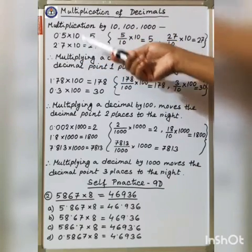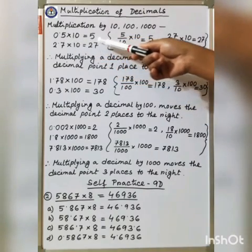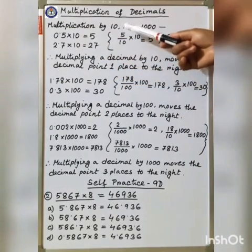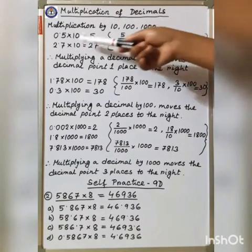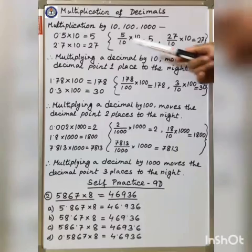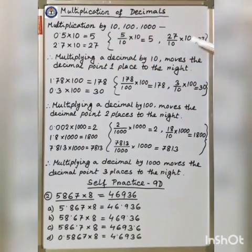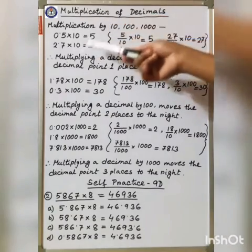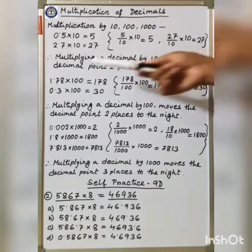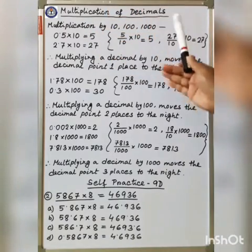Just place one digit from your answer on the right side. So the decimal point is here and the answer is 27. Now: 0.5 equals 5/10, into 10 equals 5. And 2.7 equals 27/10, into 10 equals 27. Therefore, multiplying a decimal by 10 moves the decimal point one place to the right.